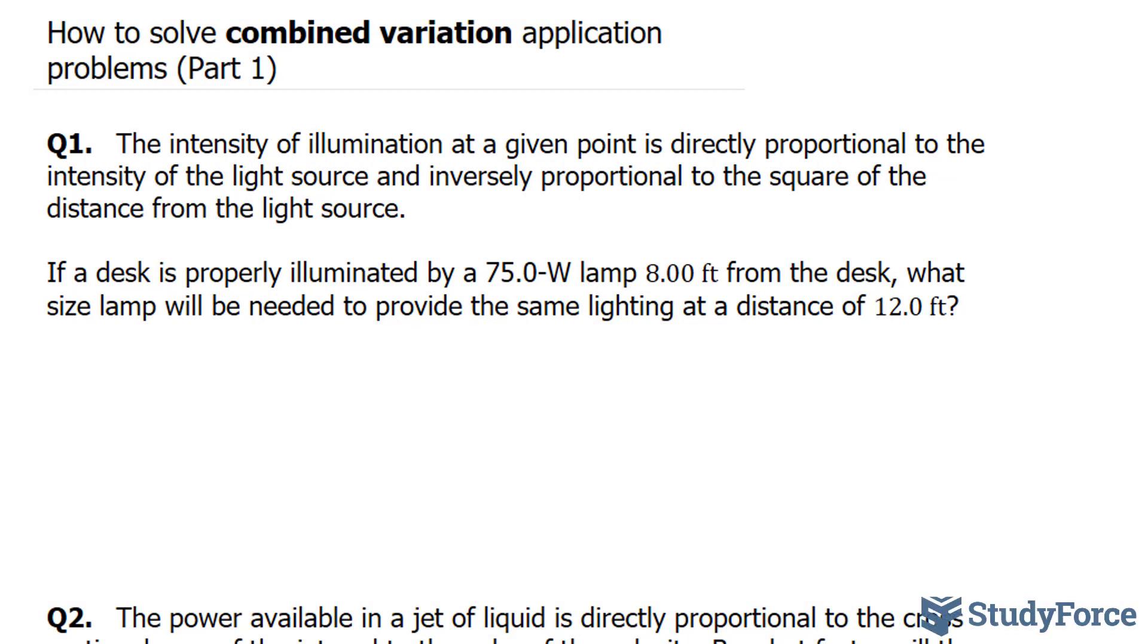The first thing you have to do is assign letters for each of these variables. The dependent variable here is the intensity of illumination, and it depends on two things: the intensity of the light and the distance. Let's assign a letter for each. I'll call the intensity of illumination I, the intensity of the light source L, and the distance D.